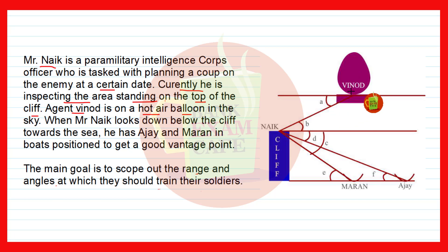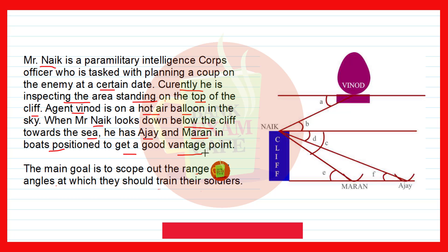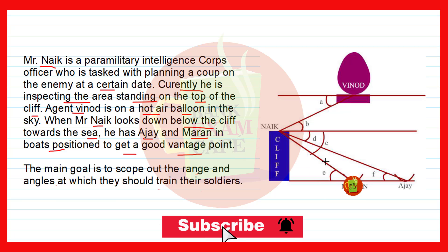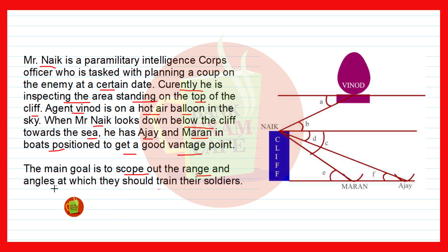When Mr. Nike looks down below the cliff towards the sea, he has Ajay and Maran in boats at particular angles. The main goal is to scope out the range and the angles at which they should train their soldiers. With the given information, you have to answer the questions asked below.